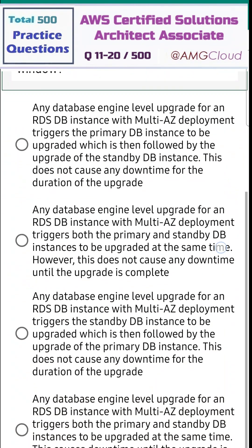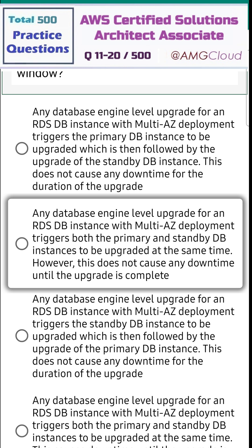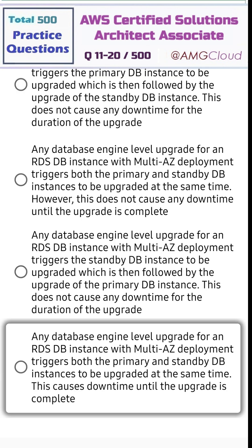Option one: any database engine level upgrade for an RDS DB instance with multi-AZ deployment triggers the primary DB instance to be upgraded, which is then followed by the upgrade of the standby DB instance — this does not cause any downtime for the duration of the upgrade. Option two: both the primary and standby DB instances are upgraded at the same time, however this does not cause any downtime until the upgrade is complete. Option three: the standby DB instance is upgraded first, which is then followed by the upgrade of the primary DB instance — this does not cause any downtime. Option four: both the primary and standby DB instances are upgraded at the same time, and this causes downtime until the upgrade is complete.